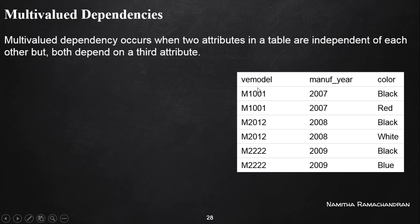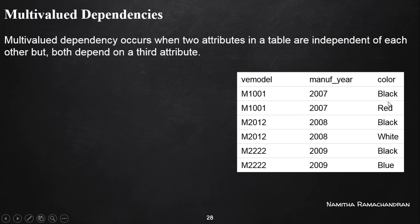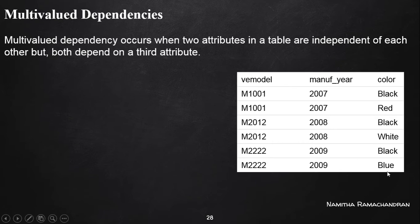Consider one example. This is a vehicle relation in which vehicle model, manufacturing year, and color attributes are given. From this table, for model number M1001, the model is manufactured in the year 2007 and two colors are released — black and red. Similarly, model M2012 was released in 2008 with two colors: black and white. And model M2222 was released in 2009 with two colors.